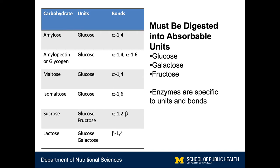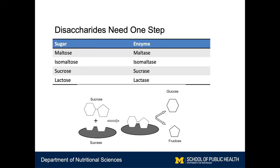It's important to remember that the enzymes that break these bonds are specific to the glycosidic linkages — both the monosaccharides that comprise them and the shape of the bonds, whether they're alpha or beta, and whether they're an alpha-1,4 or an alpha-1,6.